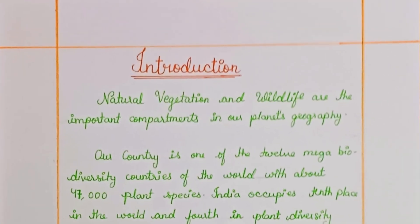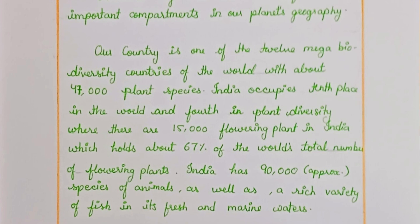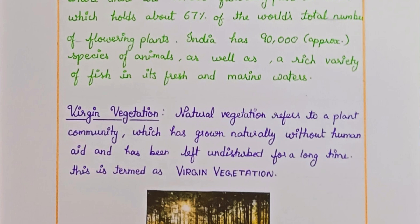Introduction: Natural Vegetation and Wildlife are important compartments in our planet's geography. Our country is one of the 12 mega biodiversity countries of the world, with about 47,000 plant species. India occupies 10th place in the world and 4th in plant diversity, where there are 15,000 flowering plants in India, which holds about 67% of the world's total number of flowering plants. India has approximately 90,000 species of animals, as well as a rich variety of fish in its fresh and marine waters.